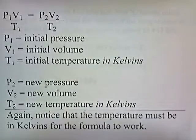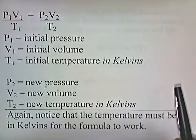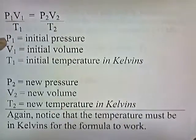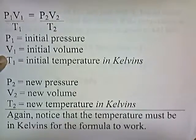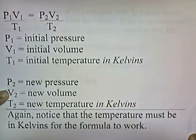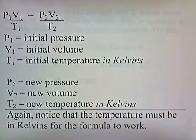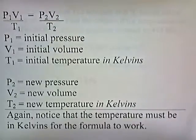The combined gas law formula is: P1 V1 over T1 equals P2 V2 over T2. P1 is the initial pressure, V1 is the initial volume, T1 is the initial temperature in kelvins, P2 is the new pressure, V2 is the new volume, and T2 is the new temperature in kelvins. Again, notice that the temperature must be in kelvins for the formula to work. The combined gas law is really just Boyle's Law, Charles' Law, and Gay-Lussac's Law combined.